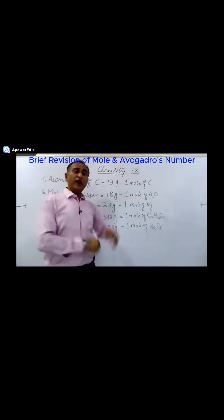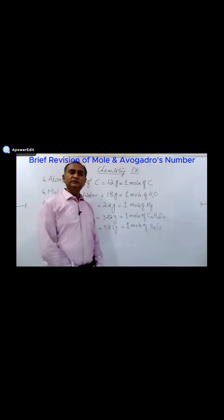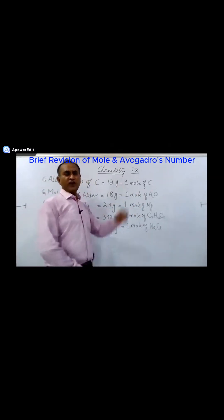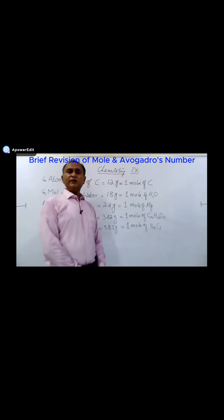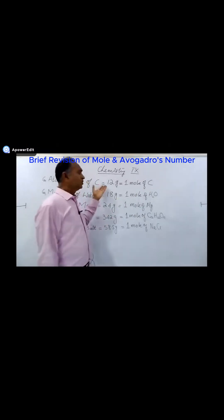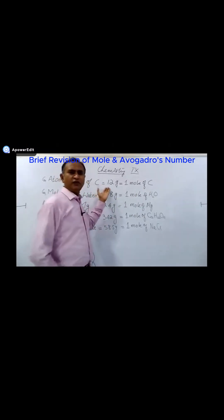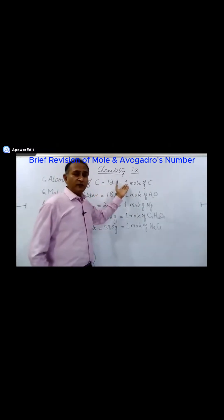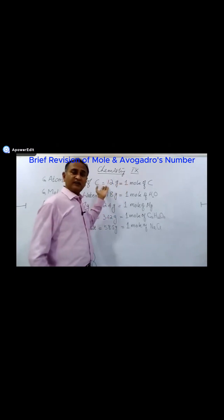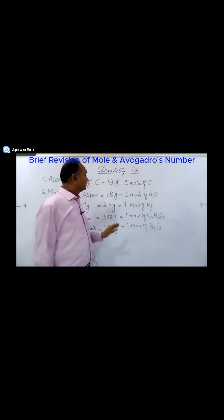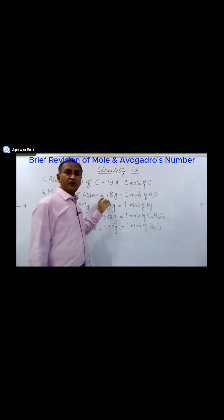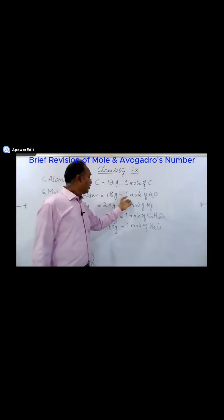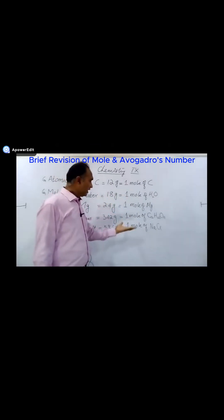If one mole of carbon is 12 grams, then two moles of carbon is 24 grams, and three moles of carbon is 36 grams, and so on. One mole of water is 18 grams, two moles of water is 36 grams, and so on.